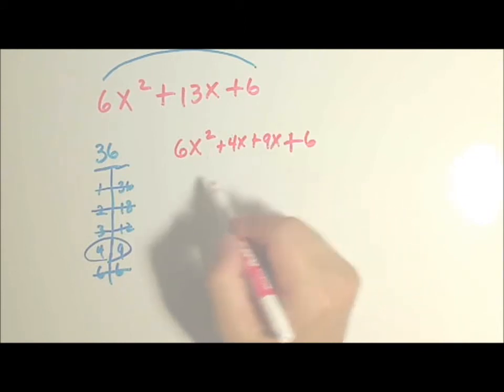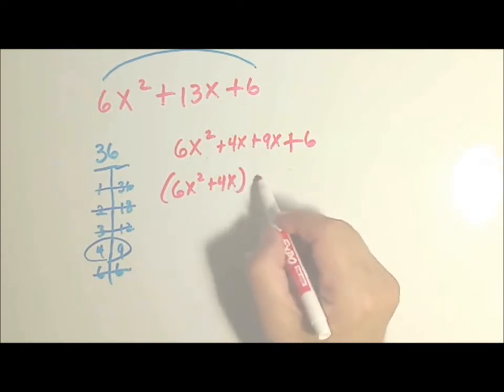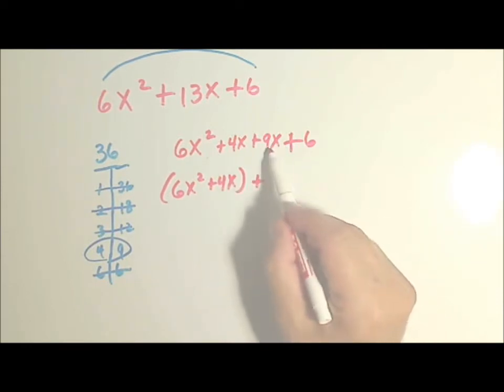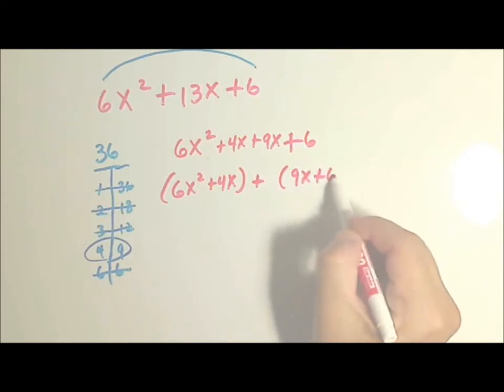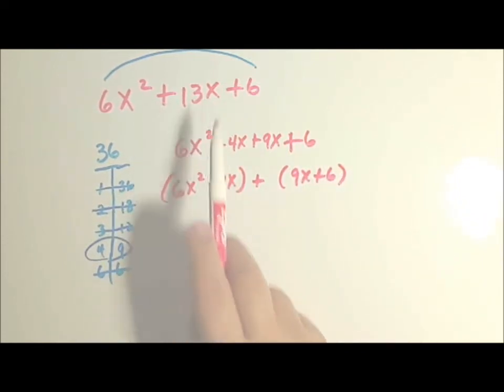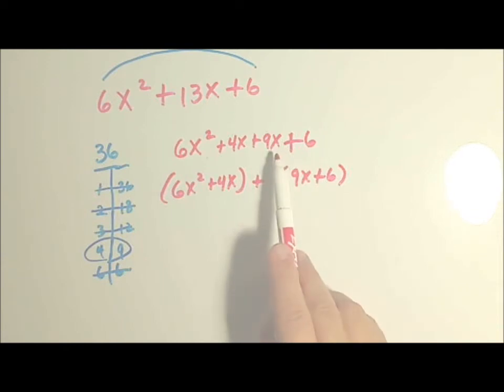Now we want to group. We want to group the first two together. And the word 'and' means plus. We want to break the second group away. So this is the same as this, because 9x and 4x is 13. And this is actually the same as this, because 6x squared plus 4x plus 9x plus 6 is still this.